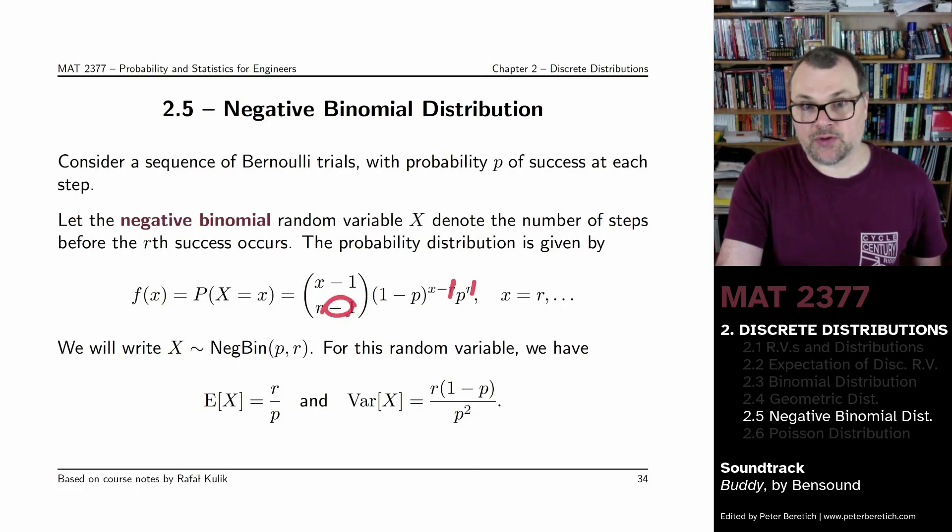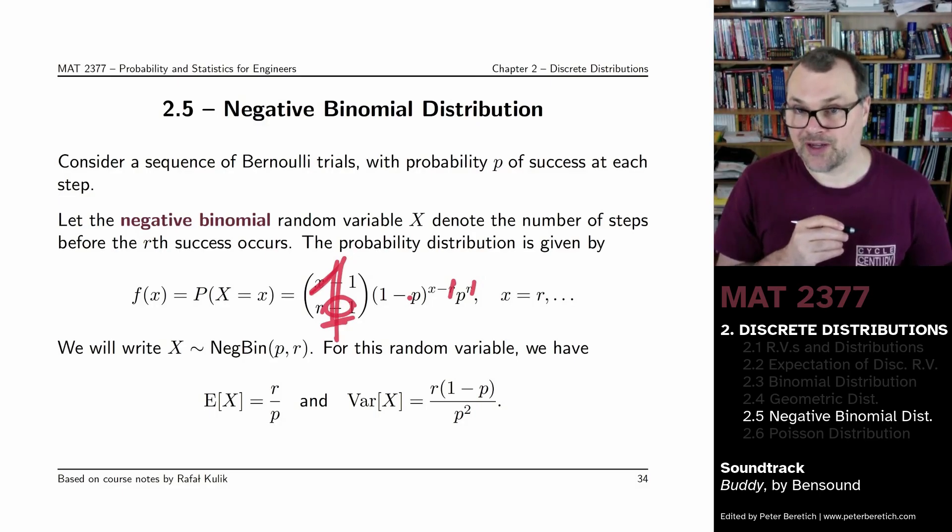R minus 1 would be 0. And anything choose 0 is 1. And so we recover the geometric probability mass function in that case.